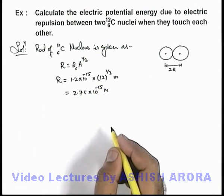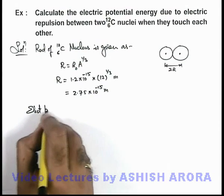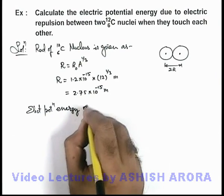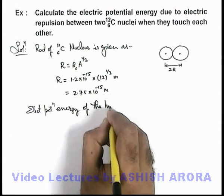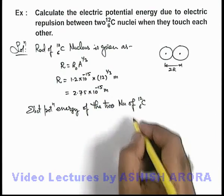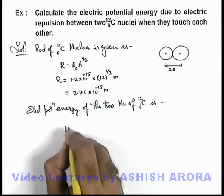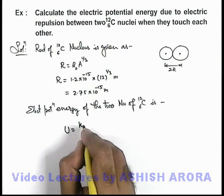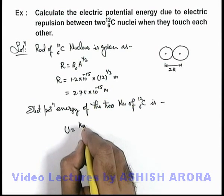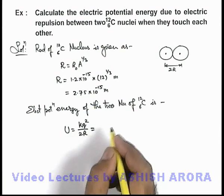That is the radius of each carbon nucleus. And if we wish to calculate the electric potential energy of the two nuclei of carbon, which we can see here in figure, this can be directly given by the expression of electric energy of two charges separated by some distance: kq²/2R, if we substitute the values.